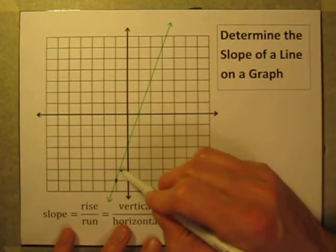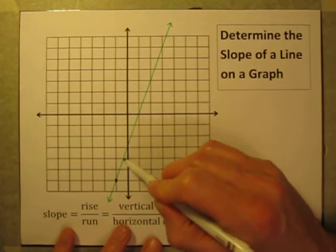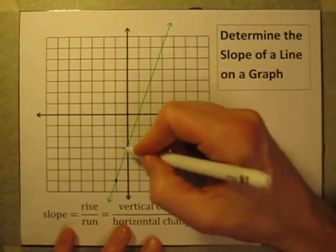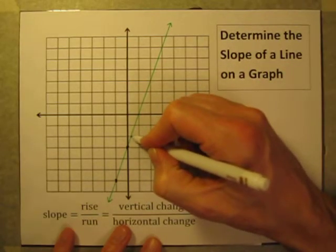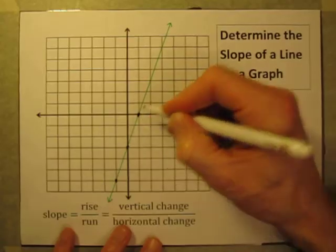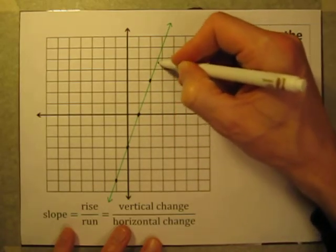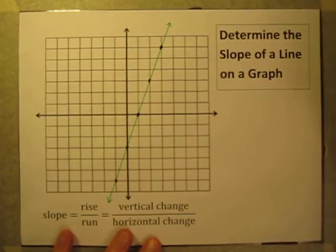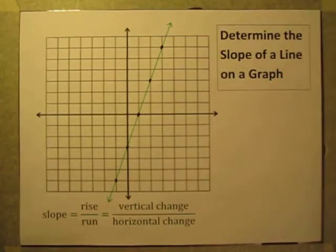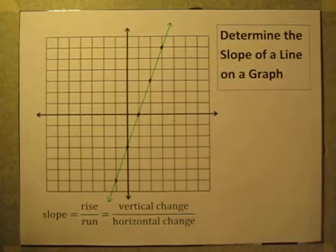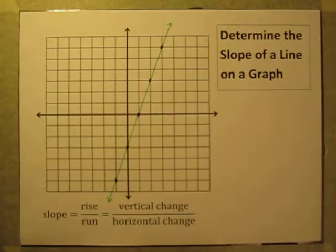Some spots on the graph aren't convenient, but others are good integer-coordinate points. You can identify several good points on this line. Which two do you compare? It doesn't really matter — you can choose any two points. I'll show you why that is.